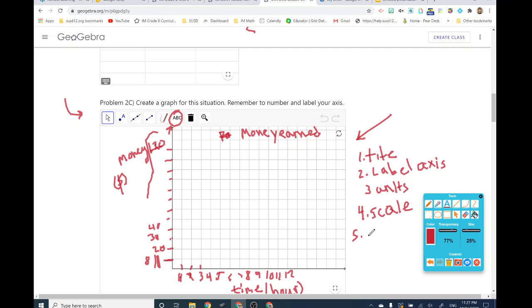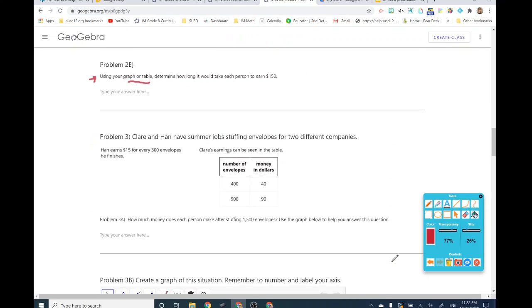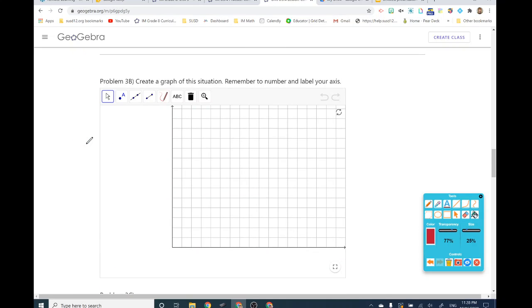And then number five, you need to plot points on the graph. And number six, make sure you draw a line that shows your points all fall on the line. Get to work, guys. Get to work. After that, on your own, I want you to try problem number three for Claire and Han. Good luck.